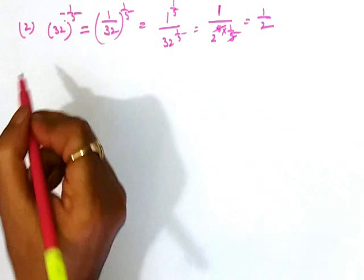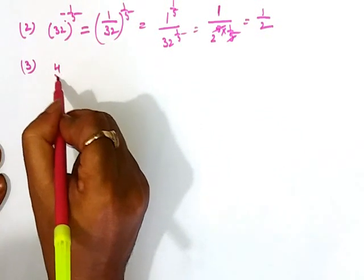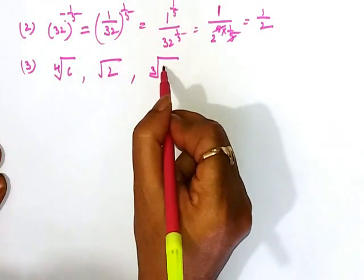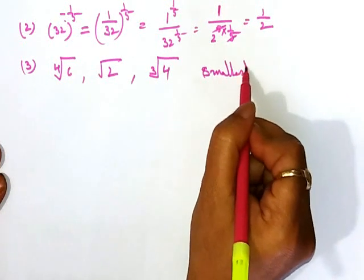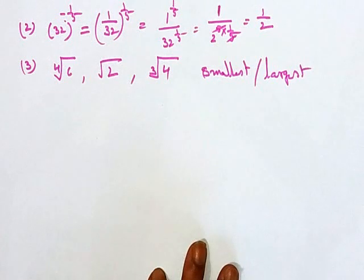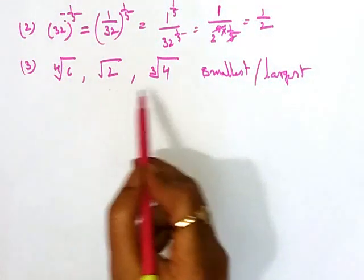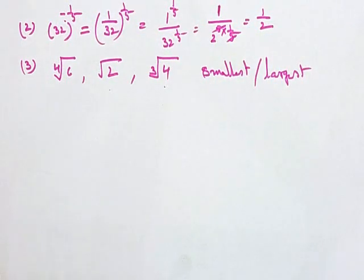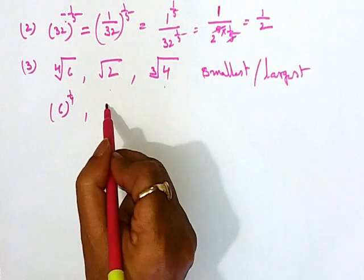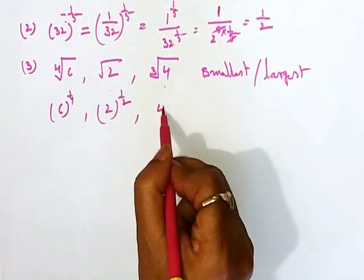Now let's move to another question — a very common question for bank exams — where students often struggle: finding which value is the smallest or largest. This is a basic class, so I will show you the basic approach for these twisted questions which are very common. The bases are different, the powers are different, and we need to find the smallest and largest. We express the numbers as: 6 to the power 1 by 4, 2 to the power 1 by 2, and 4 to the power 1 by 3.